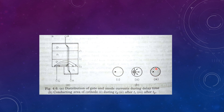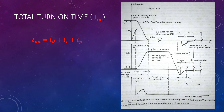During spread time, the conduction spreads over the entire cross section of the gate cathode junction. After spread time, the anode current reaches its final value and the anode voltage across the SCR reaches the on state voltage drop. The total turn on time T_on is given by: T_on = TD (delay time) + TR (rise time) + TP (spread time).